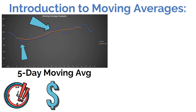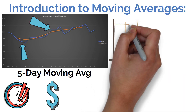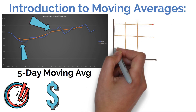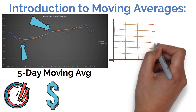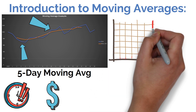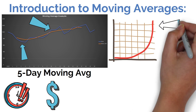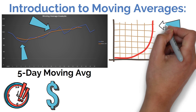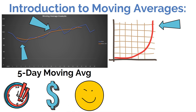A second, somewhat more complex way of calculating the moving average is to use an exponential moving average. This approach is still ultimately trying to accomplish the same thing as the simple moving average, it's just that instead of taking a simple arithmetic average of an investment's price, it weighs recent prices more heavily. This tends to make exponential moving averages much more responsive to sudden shifts in price movements, which can be a good or bad thing depending on your goals and the situation.